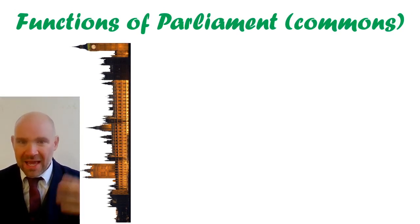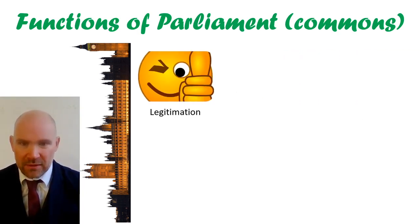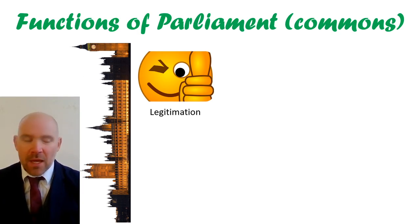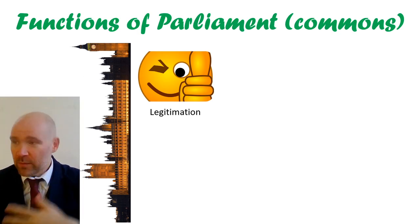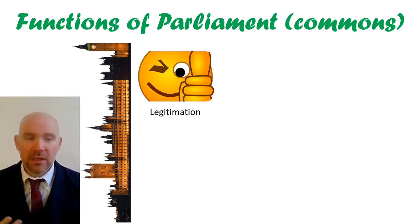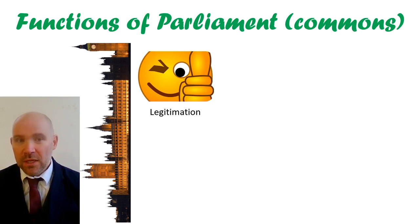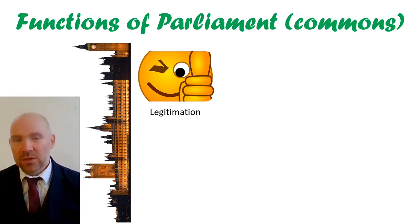Functions of Parliament — what does Parliament actually do? The first one is a theoretical idea: it provides legitimation. It basically provides the approval of the people for the laws. You and I vote for our local MP, our local MP goes to Parliament to represent us, and they will vote yes or no on certain laws, which provides legitimacy — public approval — for the laws that the government puts forward. The word we're using here is legitimation.